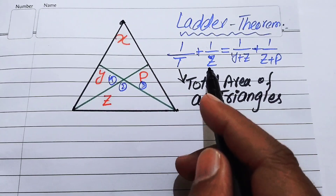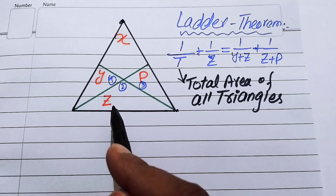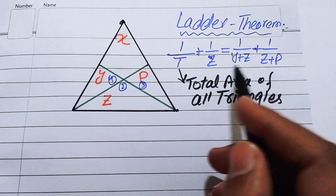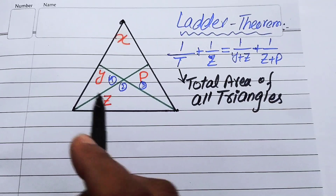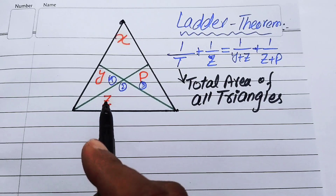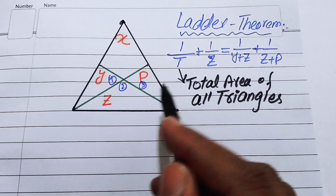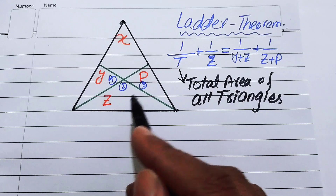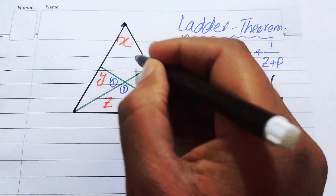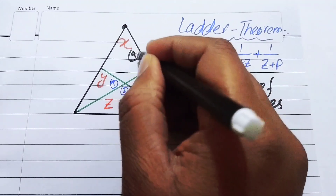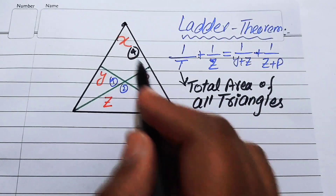z denotes the area of the second triangle. y + z means you add the area of the first and second triangles. z + p means you add the area of the second and third triangles. The fourth triangle is the biggest, whole triangle.